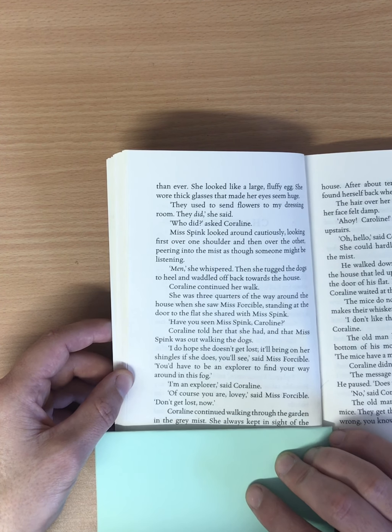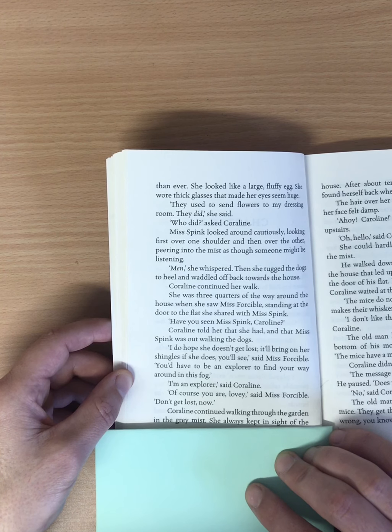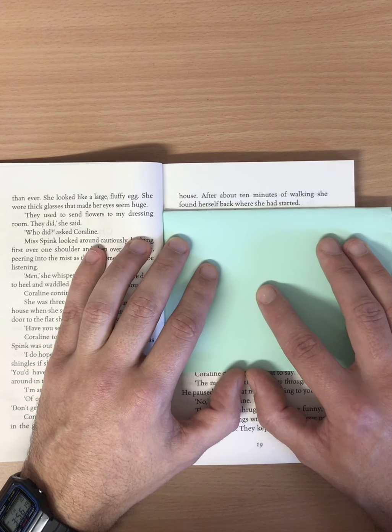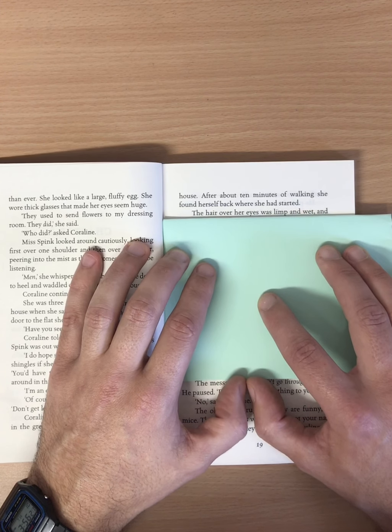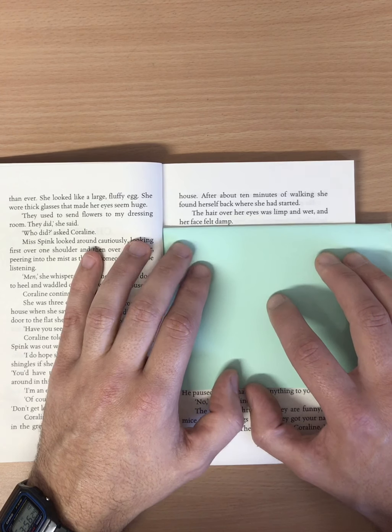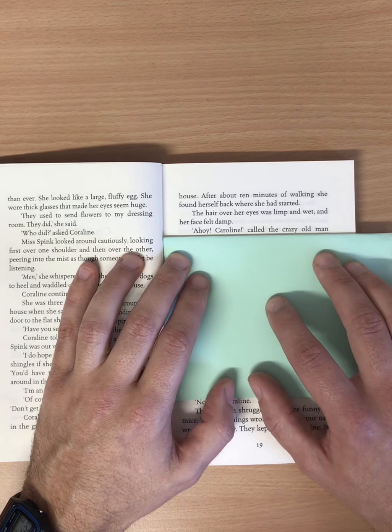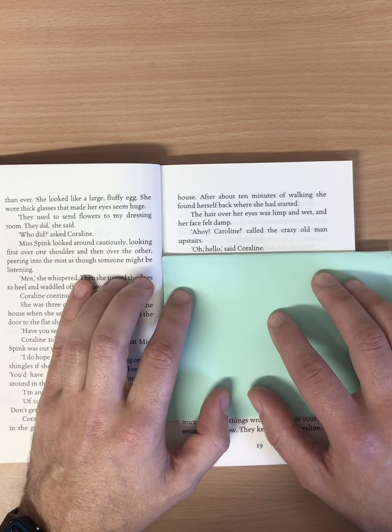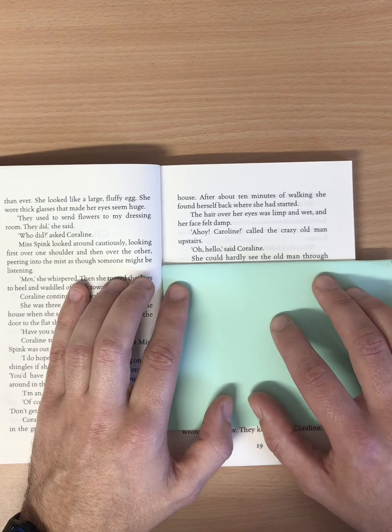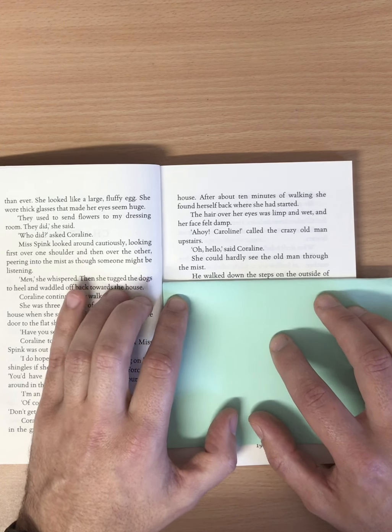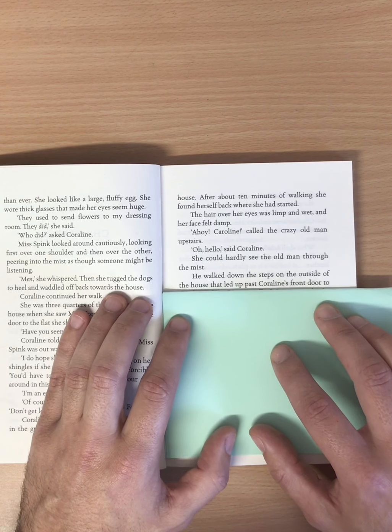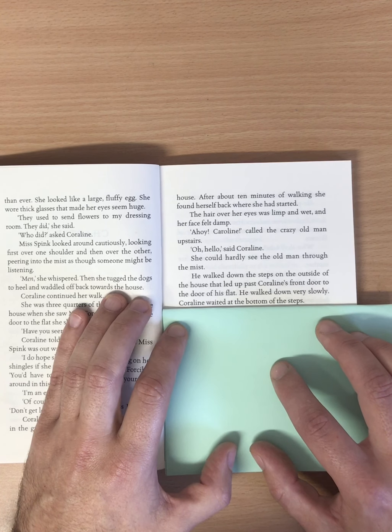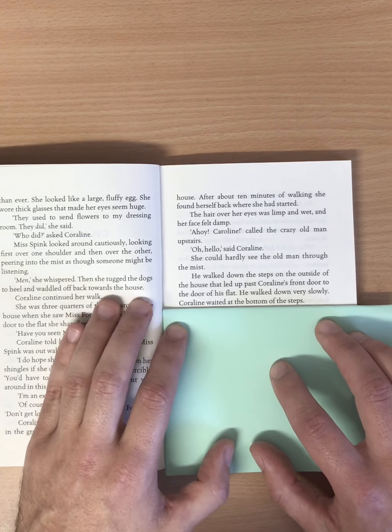Coraline continued walking through the garden in the grey mist. She always kept in sight of the house. After about ten minutes of walking, she found herself back where she had started. The hair over her eyes was limp and wet, and her face felt damp. Ahoy, Caroline, called the crazy old man upstairs. Oh, hello, said Coraline. She could hardly see the old man through the mist. He walked down the steps on the outside of the house that led up past Coraline's front door to the door of his flat. He walked down very slowly. Coraline waited at the bottom of the steps.